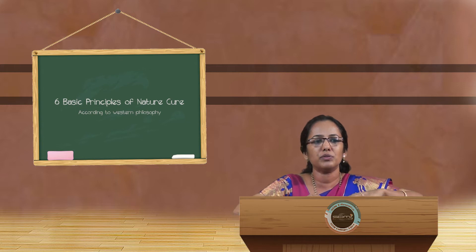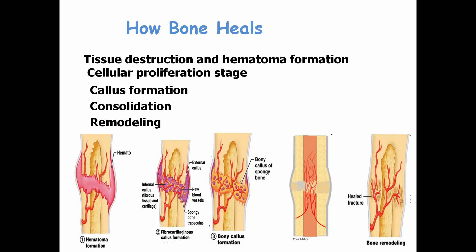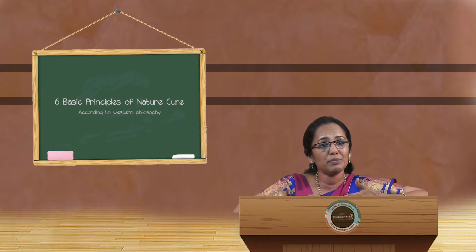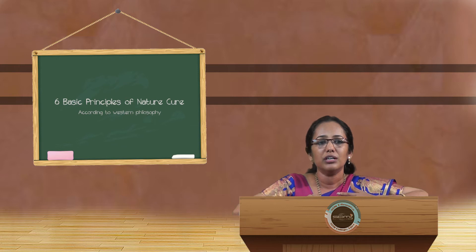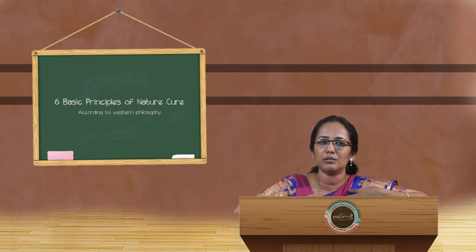The bone heals by itself: first a hematoma forms around the fractured joint, then there is increased vascularity to the area, followed by cellular proliferation, callus formation, consolidation with the help of osteoblasts and osteoclasts, and finally remodeling — all happening without external help. After a few months, an X-ray shows the bone has healed. This is one of the best examples of Vis Medicatrix Naturae.